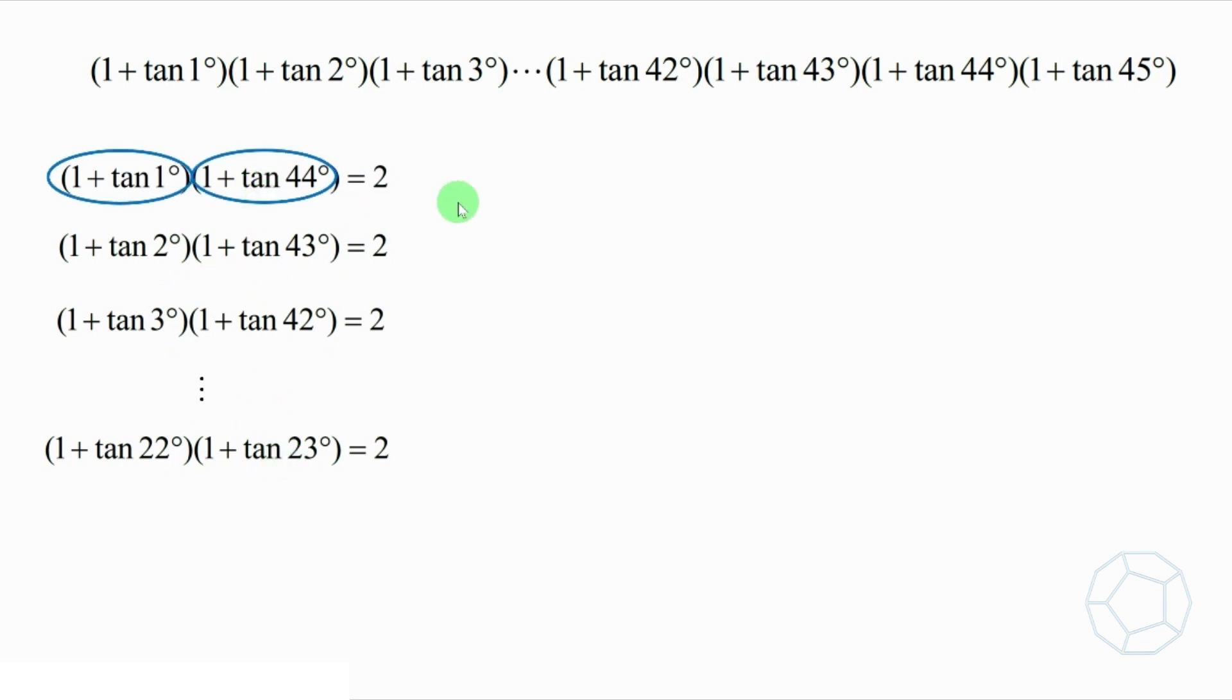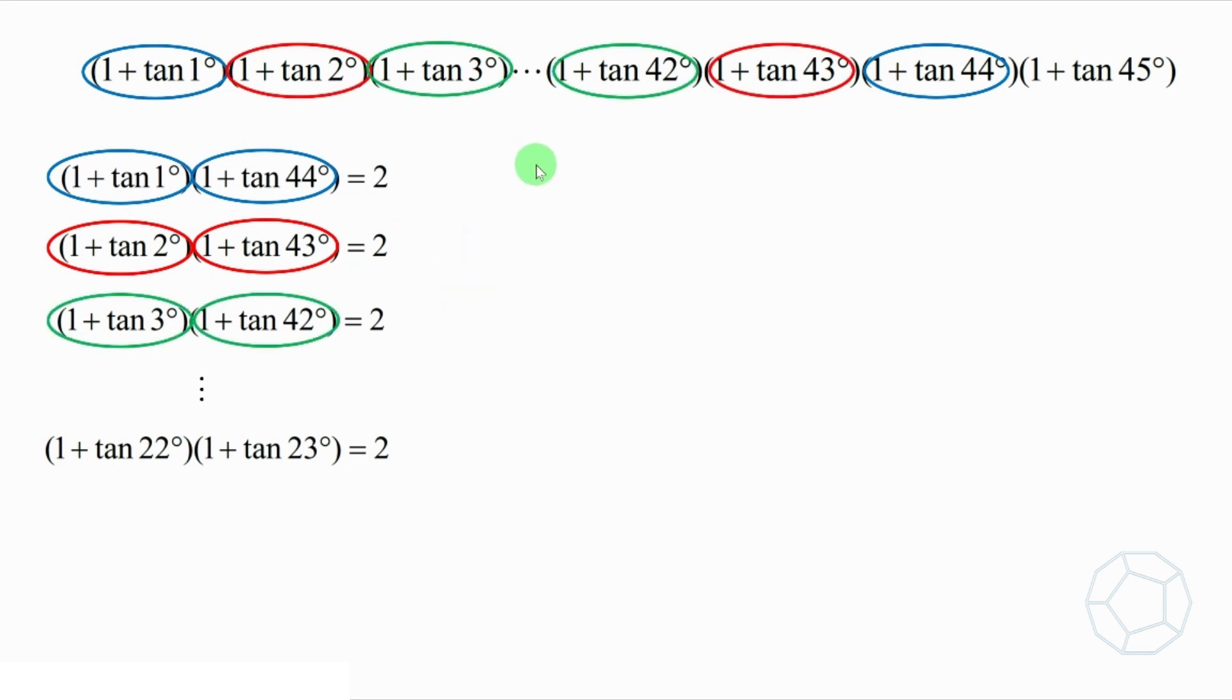We can see that these pairs are the terms from the front and the back, just like what we mentioned at the beginning of the video. They are 22 times of 2, so we have 2 to the power of 22.